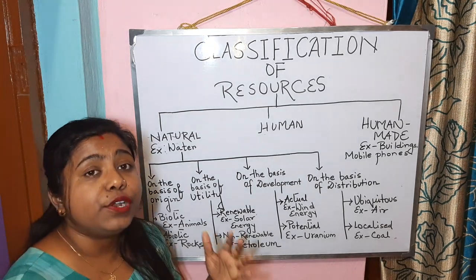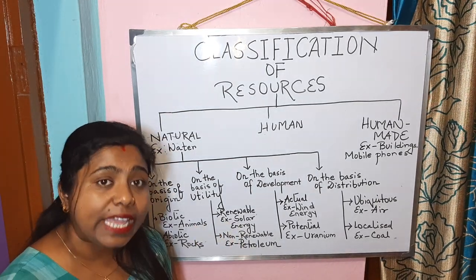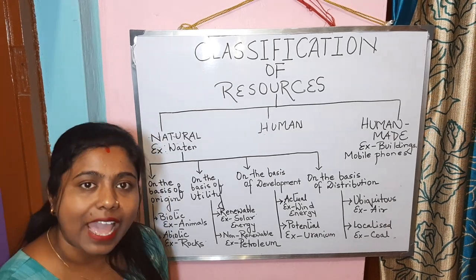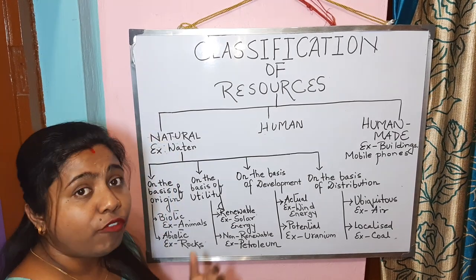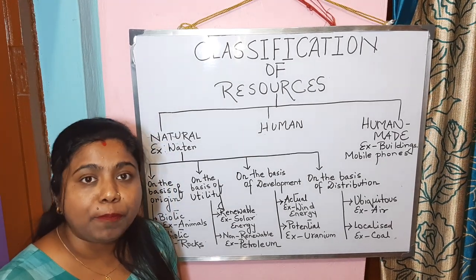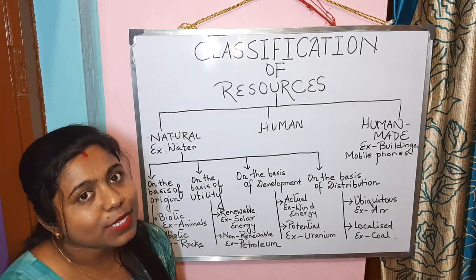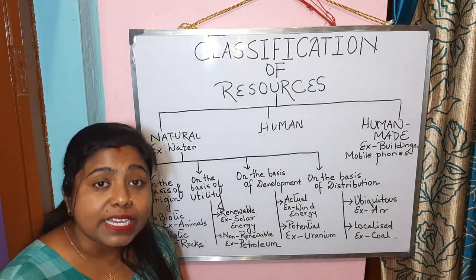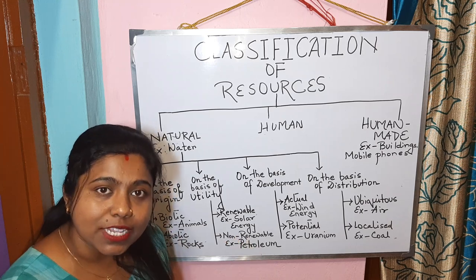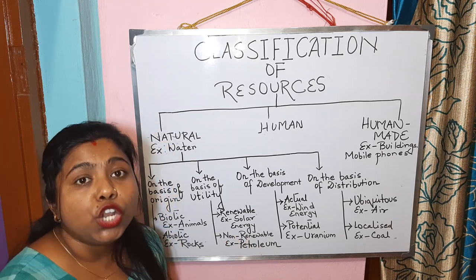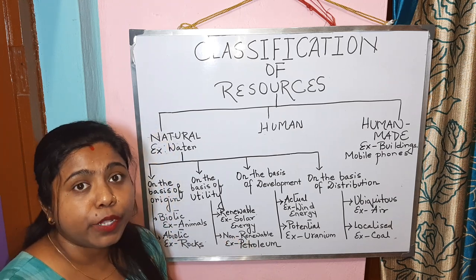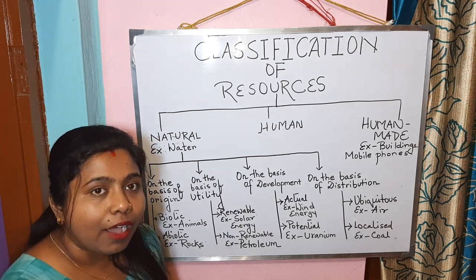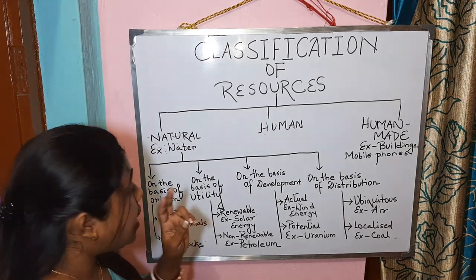On the basis of origin, resources are subdivided into biotic resources and abiotic resources. Biotic resources are the resources obtained from the biosphere and comprised of living things — for example, animals and plants. Abiotic resources are the resources composed of non-living things — for example, rocks and minerals.